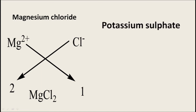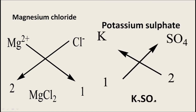Similarly, potassium sulfate: potassium is represented by K and sulfate by SO₄. The charge on potassium is +1 and on sulfate is -2. By the crisscross method, potassium takes 2, so we get K₂, and sulfate takes 1, so we get SO₄. The molecular formula of potassium sulfate becomes K₂SO₄.